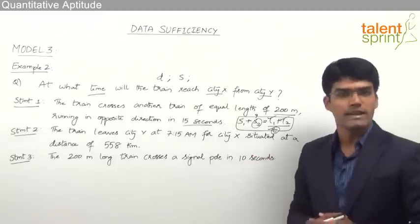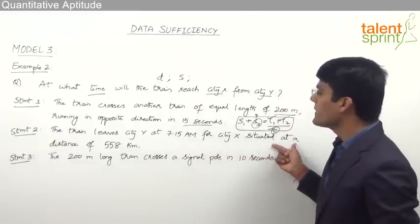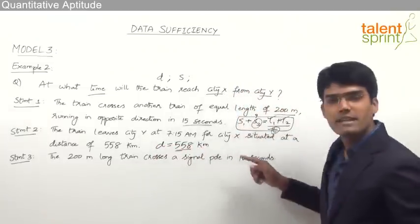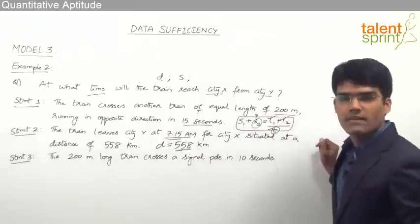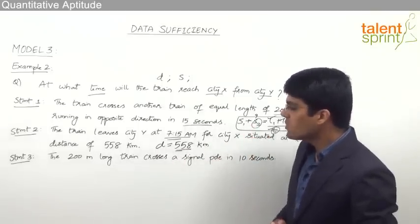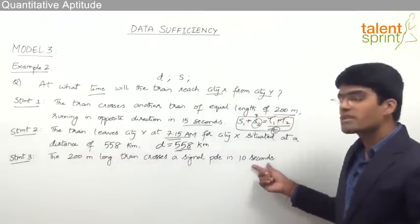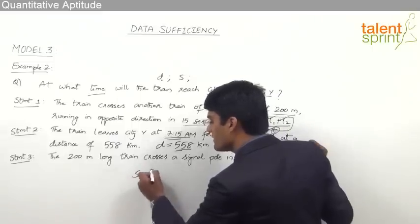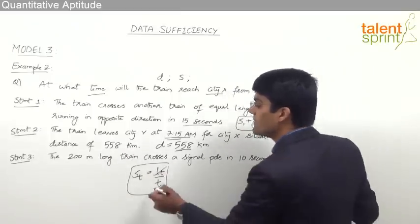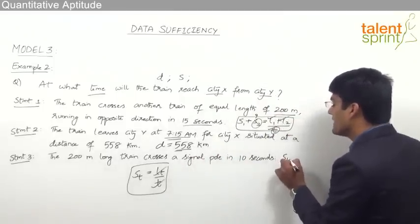From statement 2, the train leaves city Y at 7:15 AM for city X, situated at a distance of 558 kilometers. So the distance is known and the starting time is known, but speed is not given. Statement 3 says the 200-meter long train crosses a signal pole in 10 seconds. Speed = length / time = 200 / 10, giving us the speed of the train. So statement 3 provides the speed.